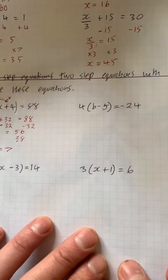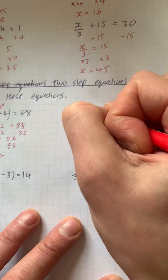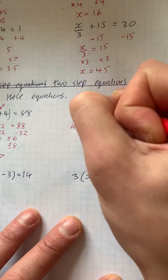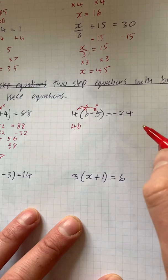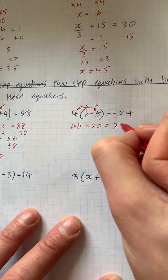Now we do the same process when there's a negative here. We just have to be very careful that we get the right sign. So we've got 4 times b, which is 4b. 4 times minus 5, which is minus 20, and that is equal to 24.